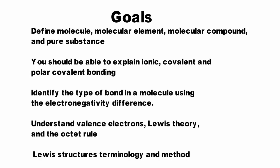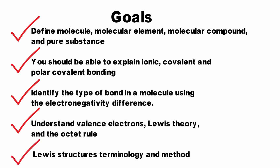We have now covered the basics of bonding between atoms. You should be able to define molecule, molecular element, molecular compound, and pure substance. You should be able to explain ionic, covalent, and polar covalent bonding, as well as identify the type of bond in a molecule using the electronegativity difference. You should have a good conceptual understanding of valence electrons, Lewis theory, and the octet rule, and have learned the methods and terminology for drawing molecular Lewis structures. Be sure to watch the videos detailing how to draw Lewis structures before attempting the problem set for this section.